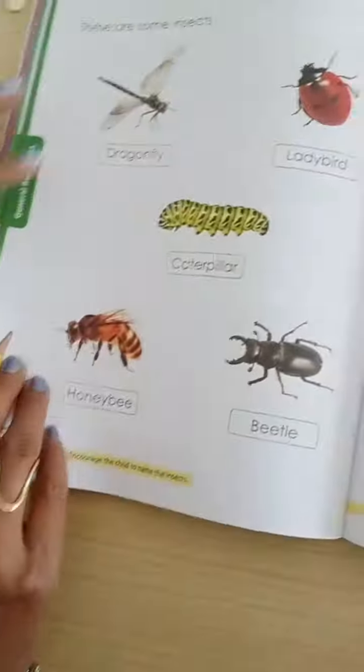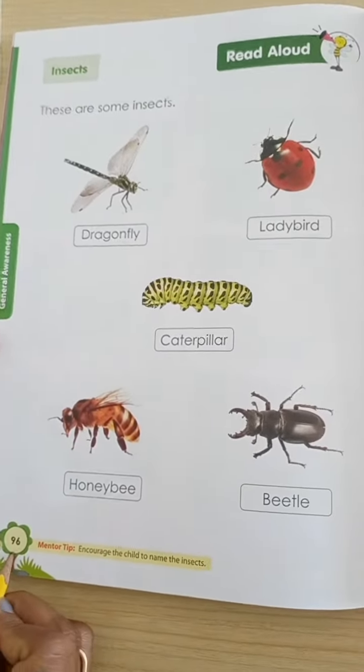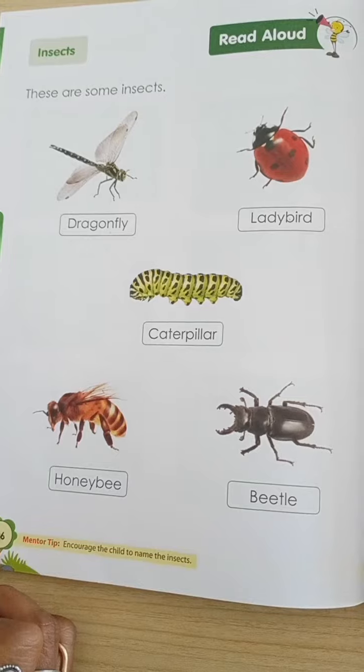Children, tick out your book 5. In that, tick out page number 96.